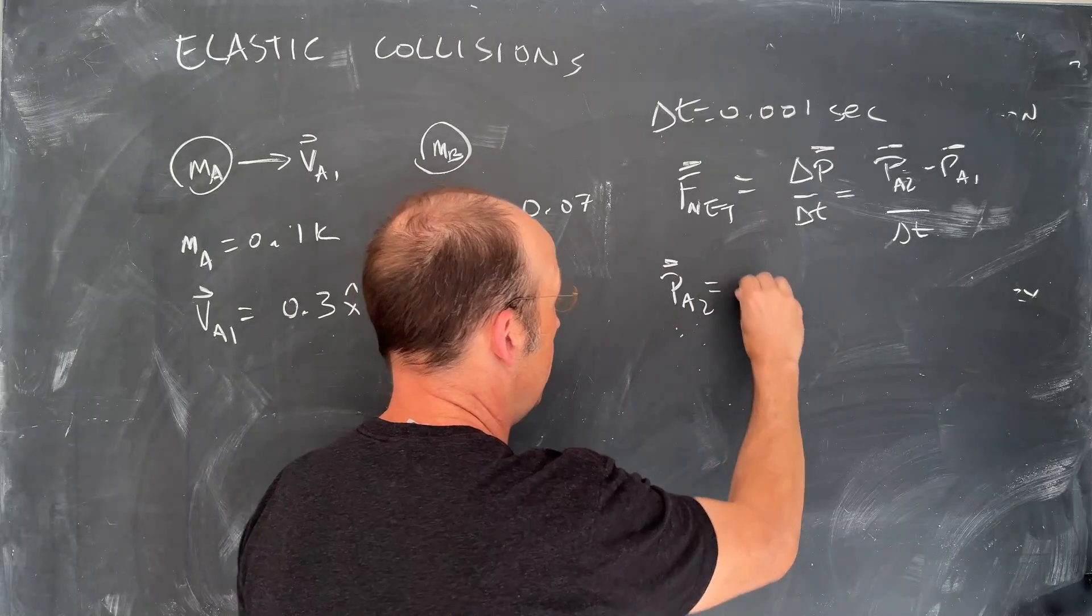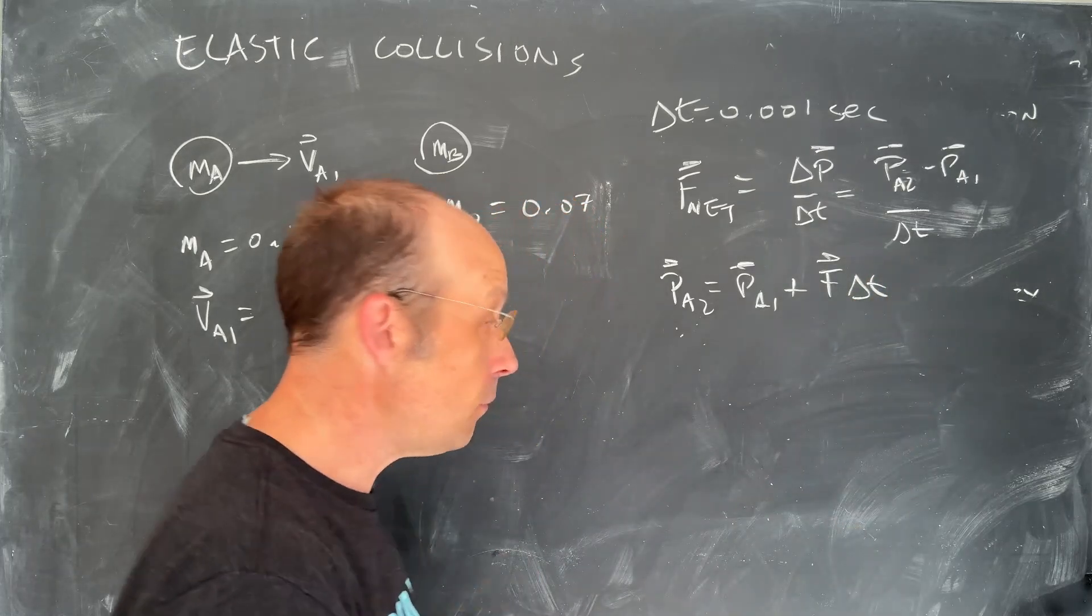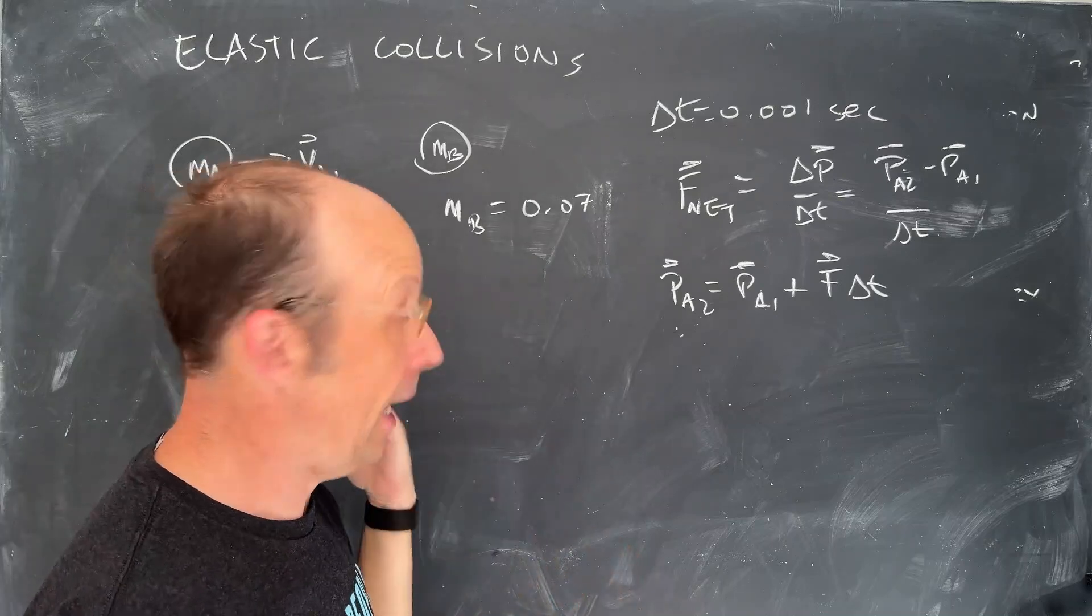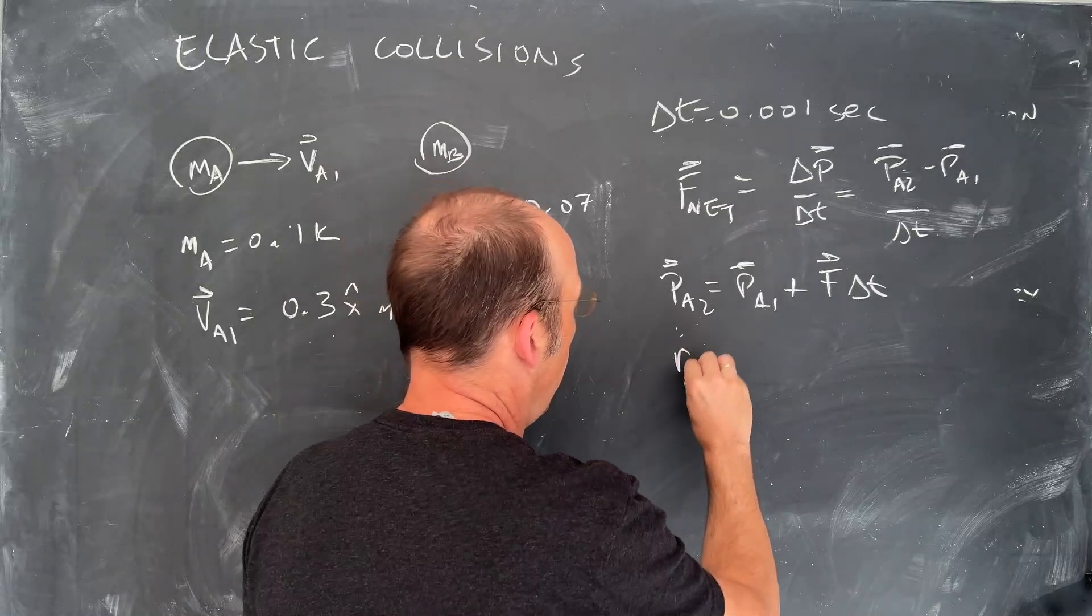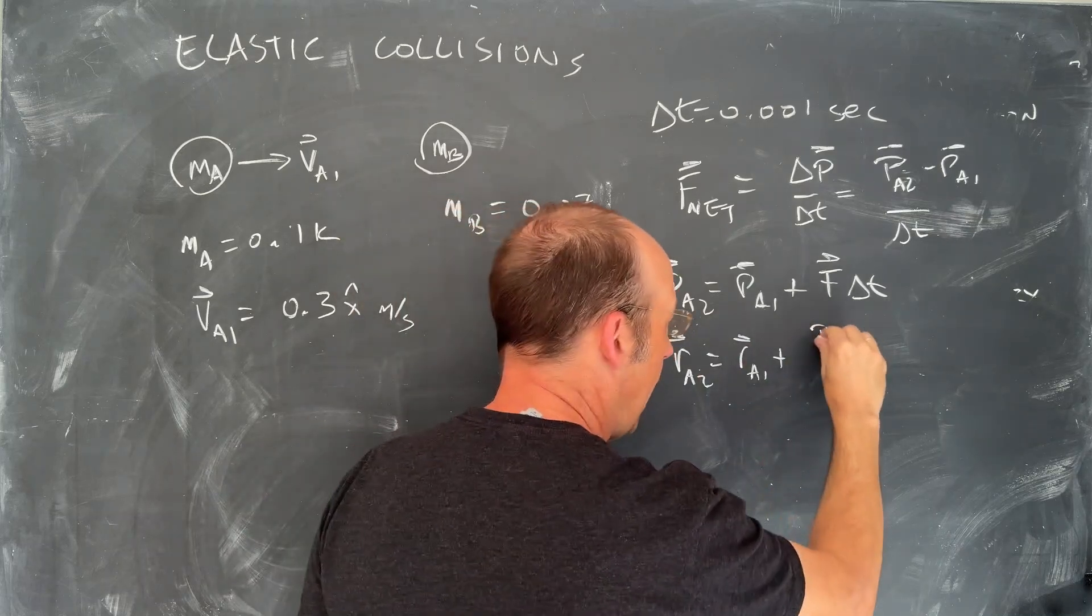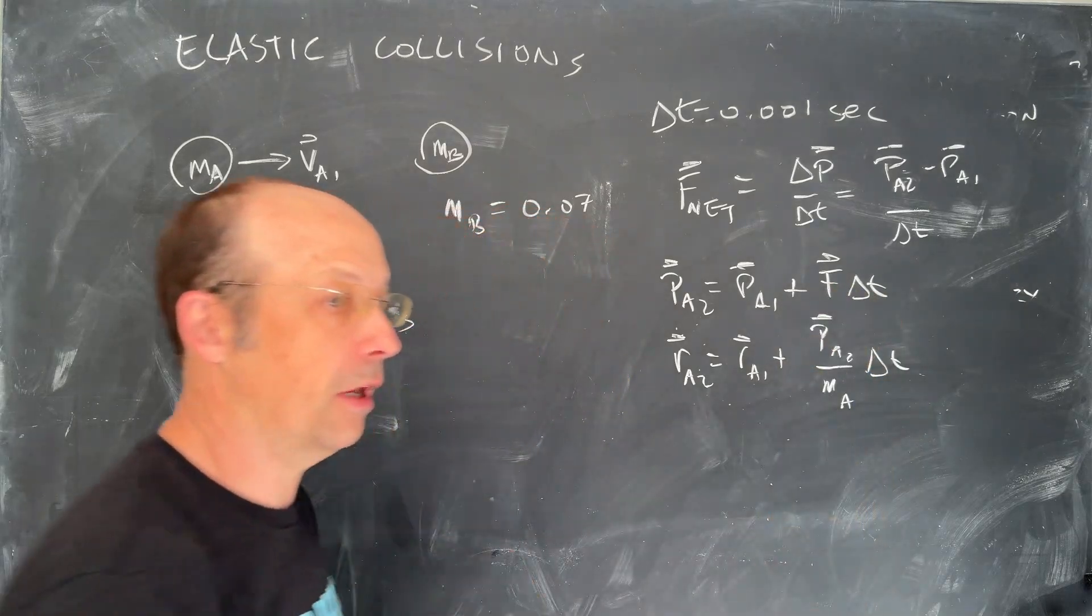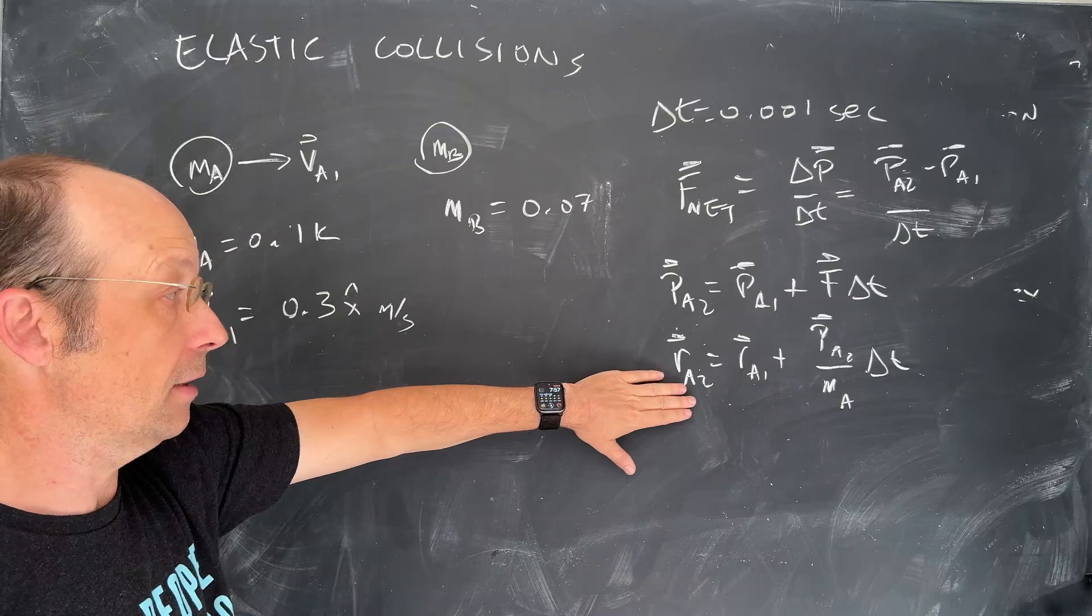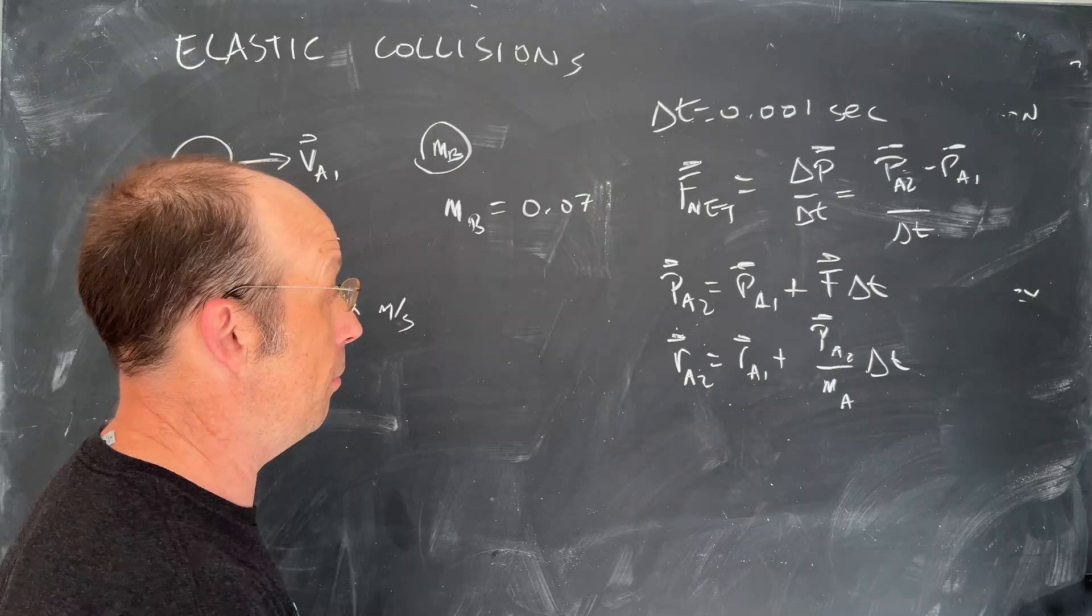If I solve this for PA2, PA2 is PA1 plus F delta T. Once I update the momentum, I can update the position of mass A. So this is using the velocity, but here I have the momentum. So it looks a little bit different. RA2 equals RA1 plus PA2 over MA delta T. So I'm going to calculate the force. I'm going to update the momentum, the position, and then I'm going to do it over again. And I need to do it for both masses just like I did for the Earth and Moon system.